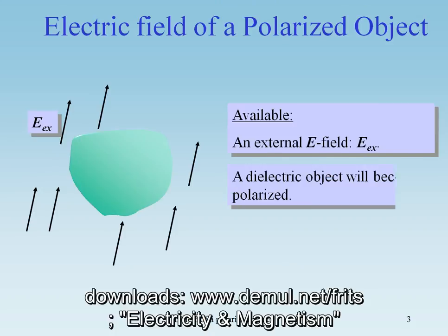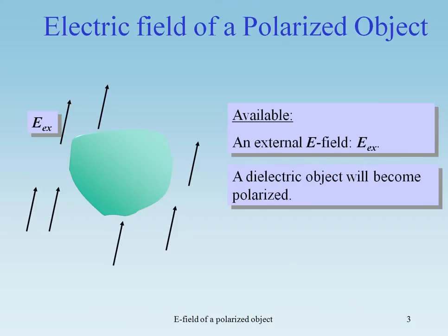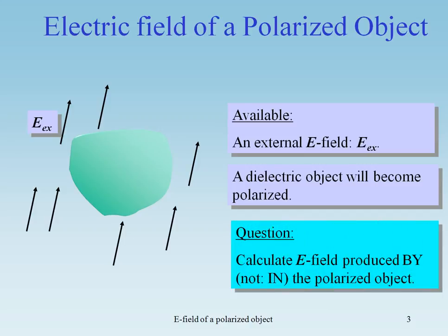Suppose we have a polarizable object, a dielectric object, and an external electric field EX. The question is: calculate the electric field produced by — so not in — the polarized object.